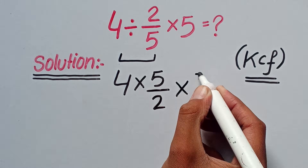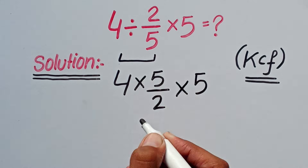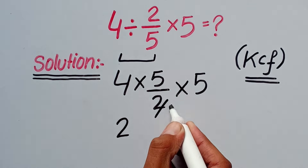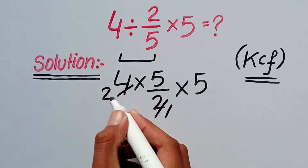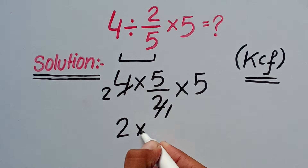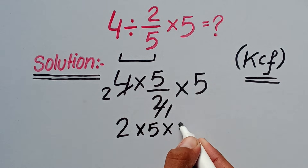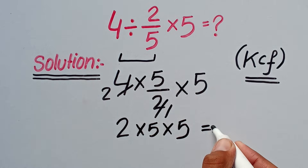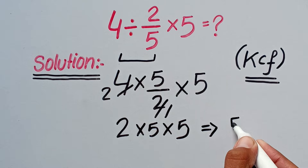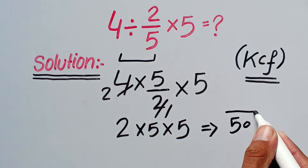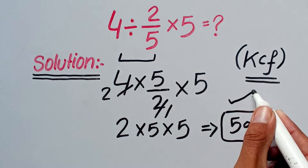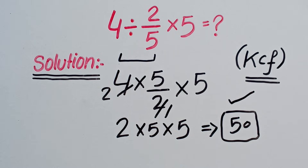So we rewrite the question. Here 4 and 2 cancel with each other — 2 ones are 2, 2 twos are 4 — and we get 2 times 5 times 5 times 5. Now 2 times 5 equals 10, and 10 times 5 equals 50. This is the final answer. Tell me in the comment section what your answer is. Thanks for watching.